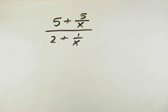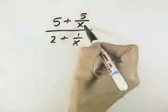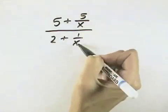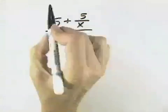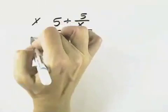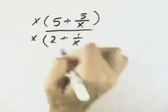So for this problem, I'm going to multiply the numerator and denominator by the common denominator of the small fractions within my complex expression, which is x. So I'm going to multiply all the way across the top and bottom of this fraction by x.